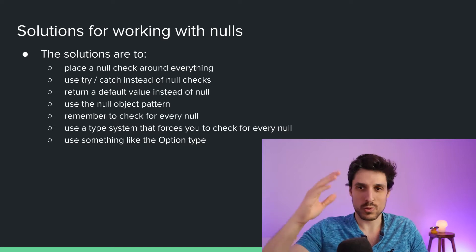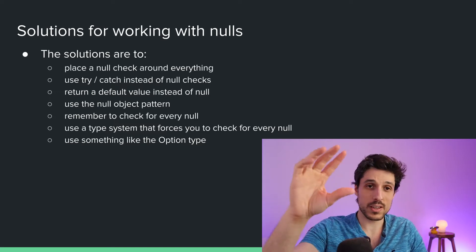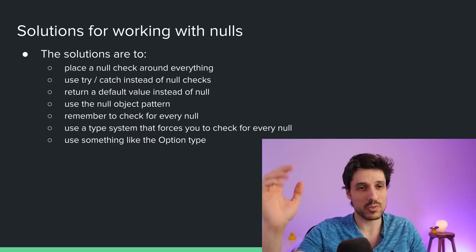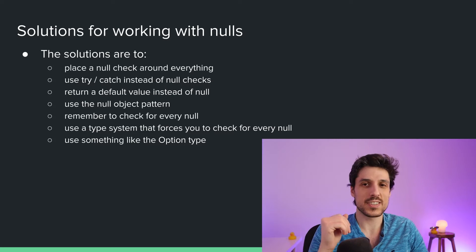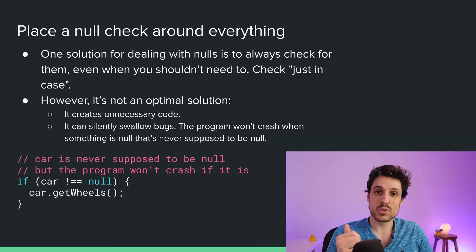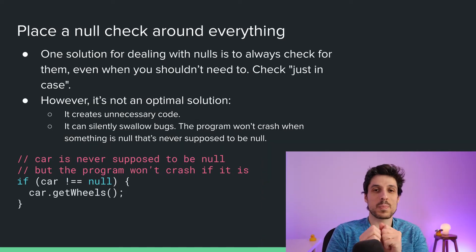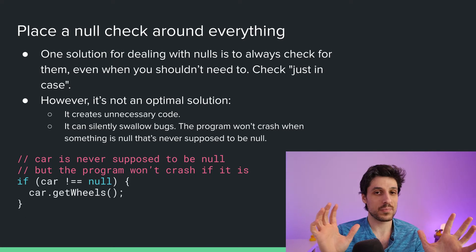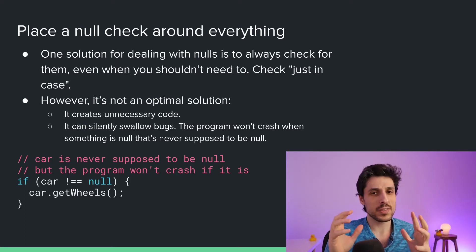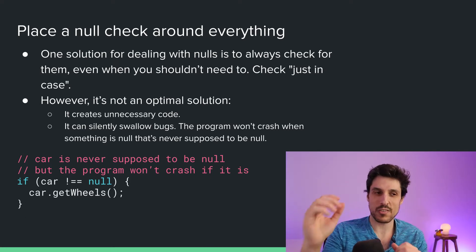We'll go through solutions one by one. Here they are on the screen — a table of contents. Let's get started. The first solution is to place a null check around everything. Anything that you think could be null, place a null check around it.